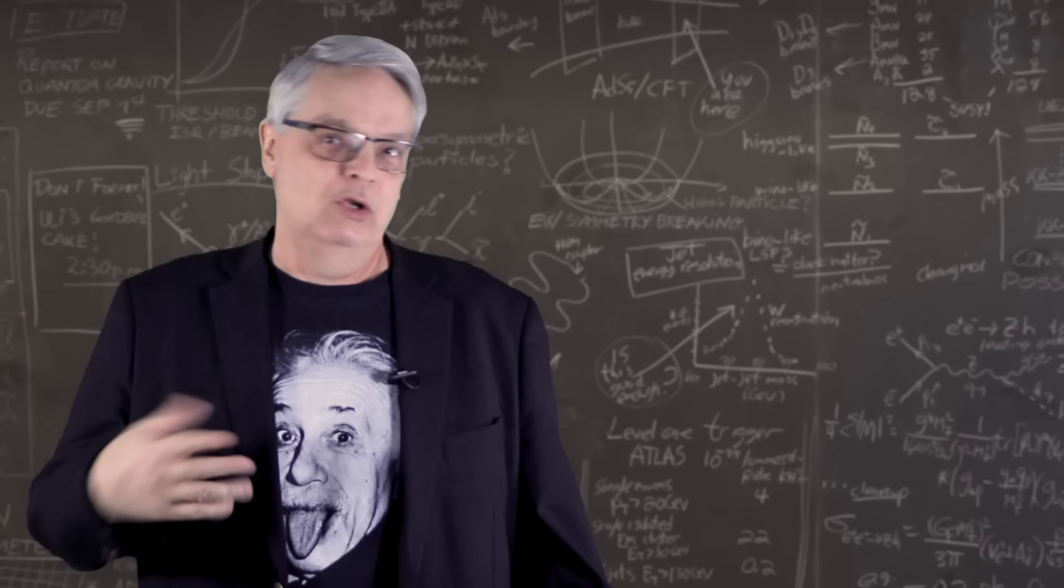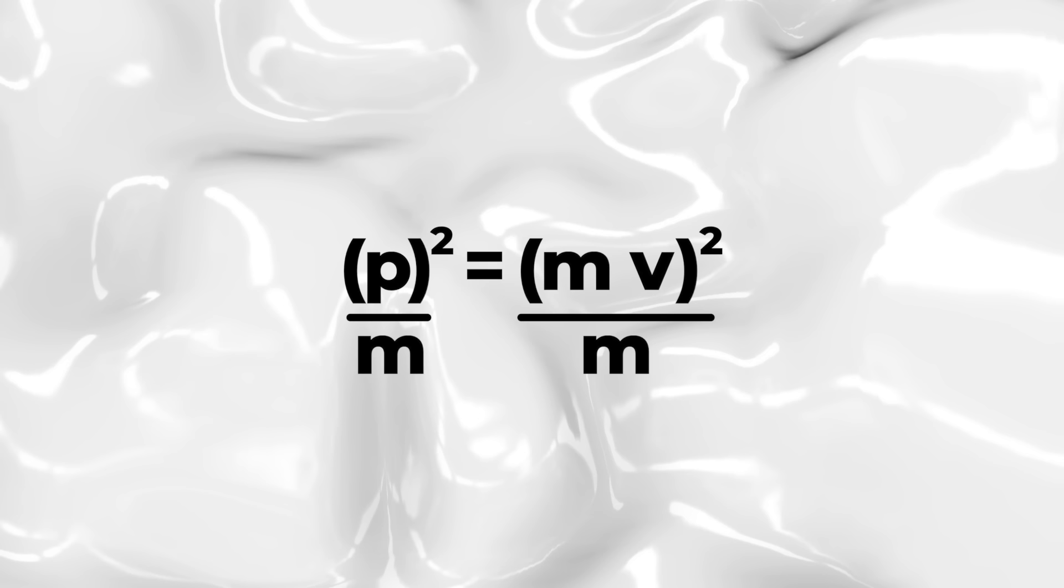Now let me show you how kinetic energy and momentum are related. Let's start with the momentum equation, p equals mv. Now square both sides. You get p squared equals m squared v squared. So far so good, right? Now divide both sides by m.